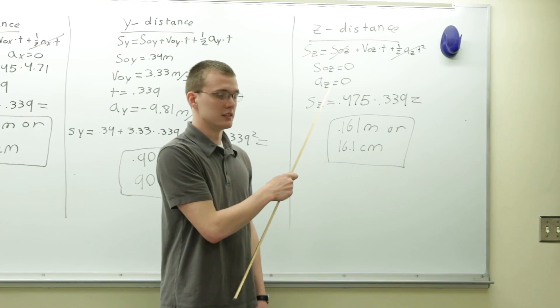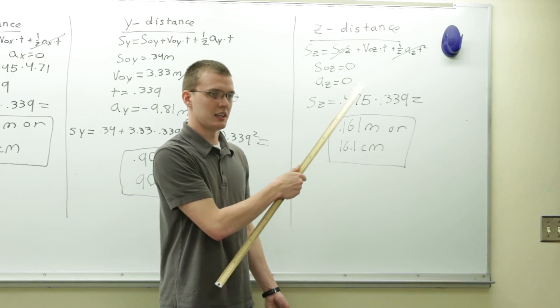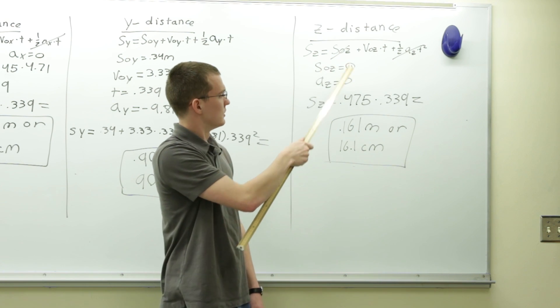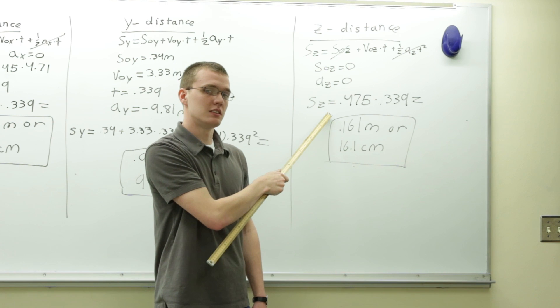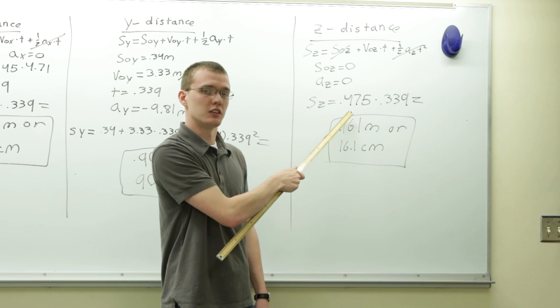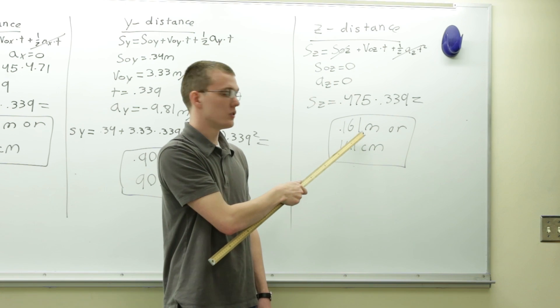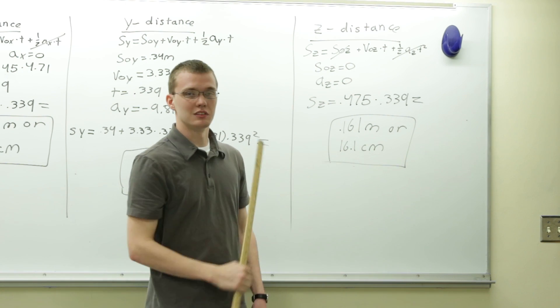And finally, the z distance. The z distance is similar to the x distance in that it has no acceleration and no initial position. So simply, the distance in the z direction is equal to the measured value of the z velocity times the time in the air. This is equal to 0.161 meters or 16.1 centimeters.